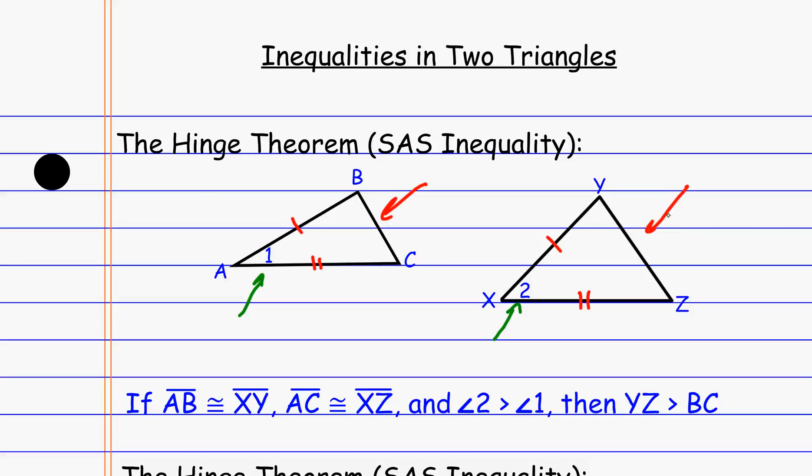The easiest way to think about how you know this is true is how a compass works. If you think of a compass being like the two sides of your triangle, and as you adjust the compass it changes the angle, we're essentially changing the measurement of the compass, making it larger or smaller. This is what we've been using to measure things when we do constructions. The hinge theorem is how the compass works in terms of measuring lengths.